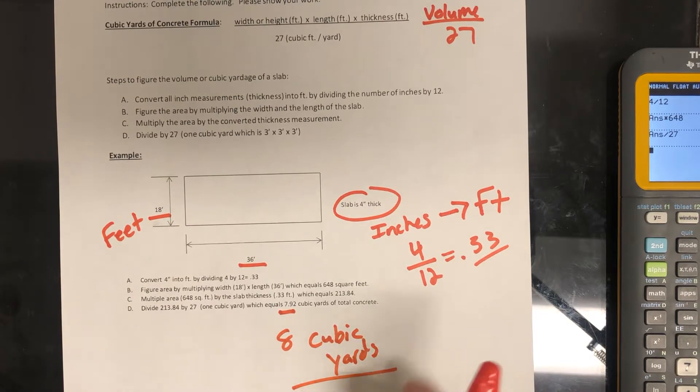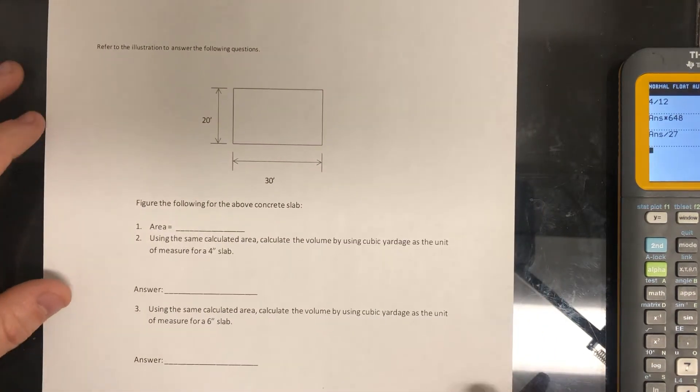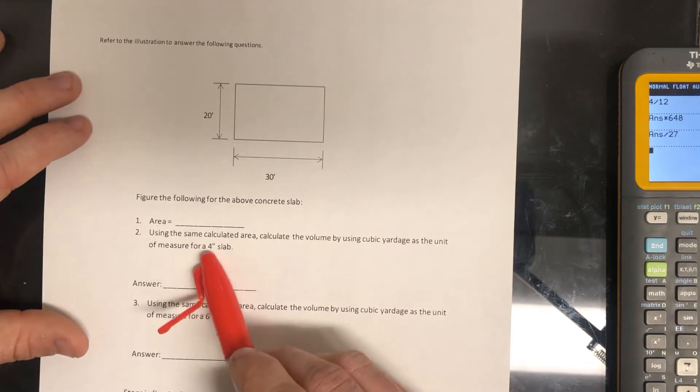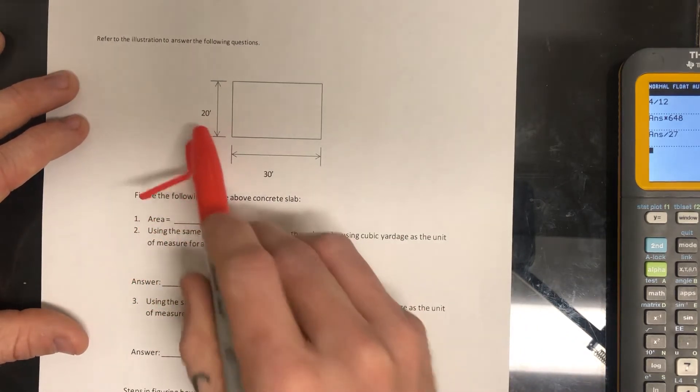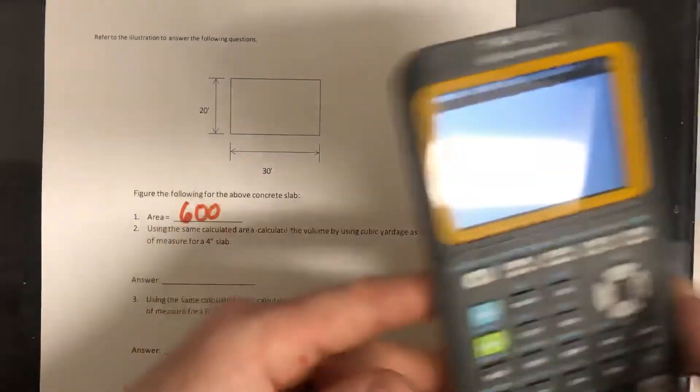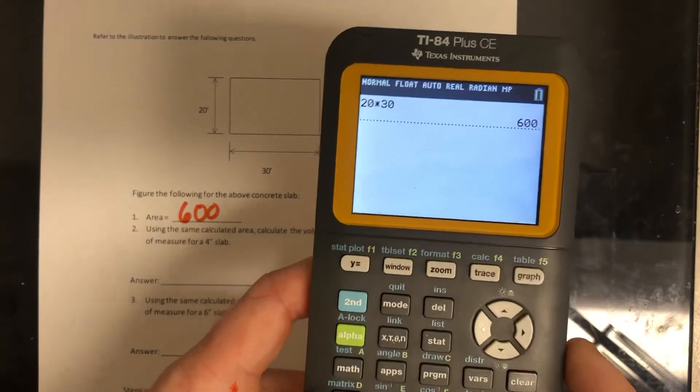And that's just going to be what you do for all of them. So I'll give you the first example here. So we have a 20 by 30 foot slab and they want to do four inches thick. So the area 20 by 30, that's going to be 600. All right, if you don't believe me, I'll show you in the calculator 20 times 30, 600.